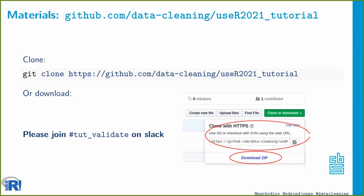You can find all materials on the GitHub page. You can either clone the page so you have everything there, or download it using the download button to get a zip file. The directory you get after cloning or downloading will be the folder you use as an RStudio project, and from there you can access all the scripts, PDFs, and example data.